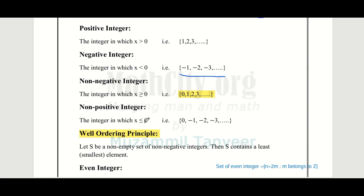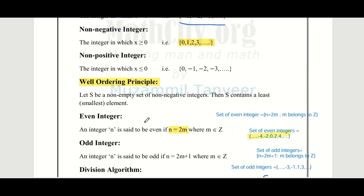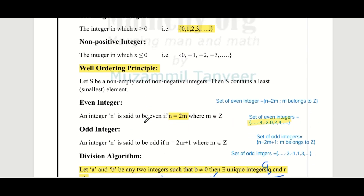You should know that for positive integers — 1, 2, 3 up to so on — 0 will not be included. For negative integers — minus 1, minus 2 — 0 will not be included. For non-positive integers, 0 will not be in the negative integers. These distinctions are important to understand.